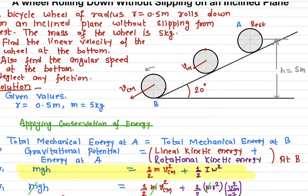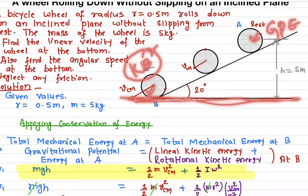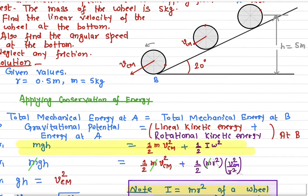As the bicycle wheel rolls down, it has both forms of energy: rotational kinetic energy and translational kinetic energy. The beauty of conservation of energy is that the total mechanical energy at any point is exactly the same. At the top, it has only gravitational potential energy, and at the bottom, it has only kinetic energy — which includes rotational kinetic energy plus linear kinetic energy.